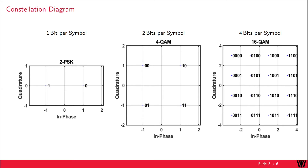4QAM has four symbols in the symbol alphabet with two bits per symbol. We could transmit the bit combination 1, 0 by sending 1 + 1j in the complex plane. The higher the modulation order, the more elements are in the symbol alphabet.